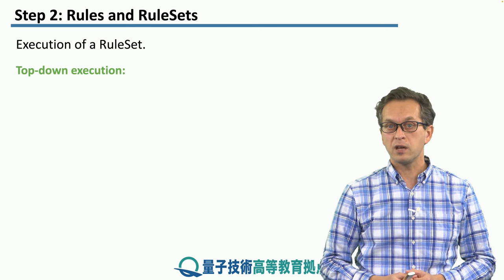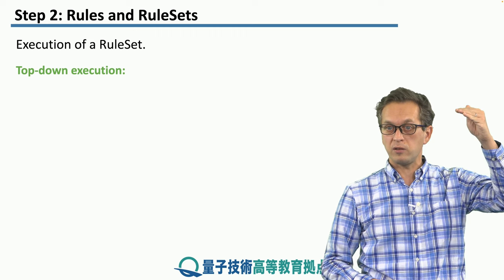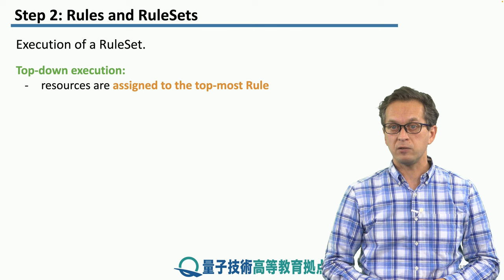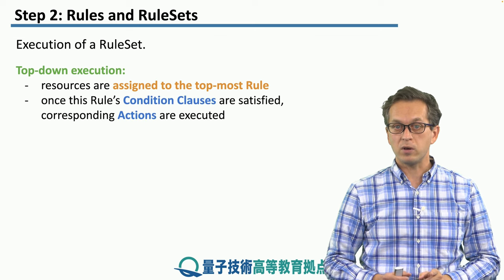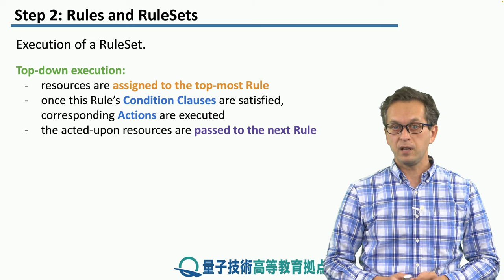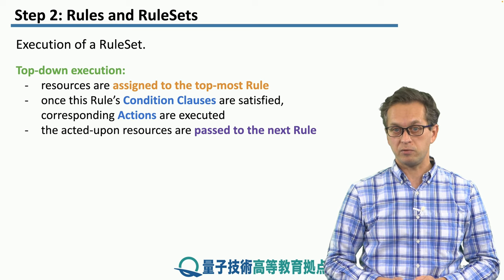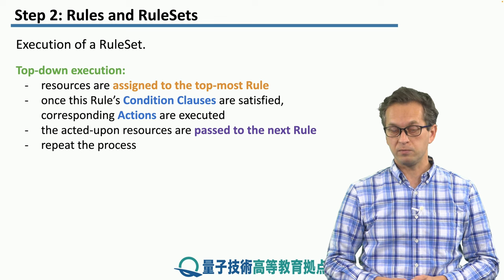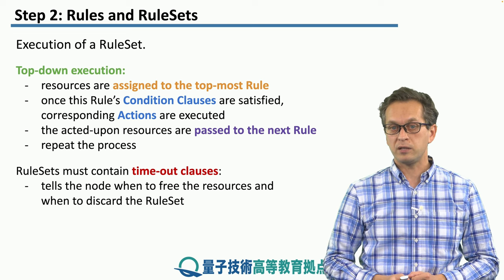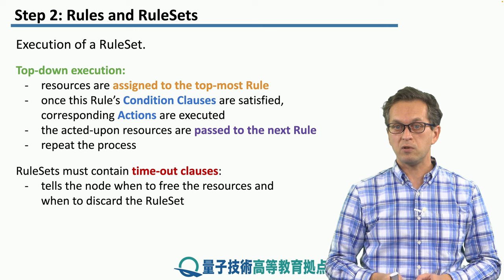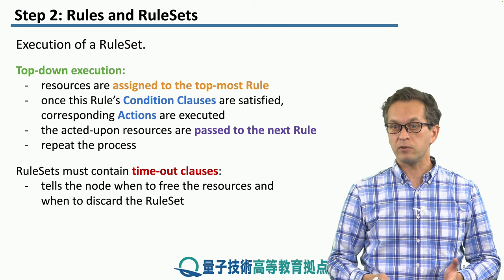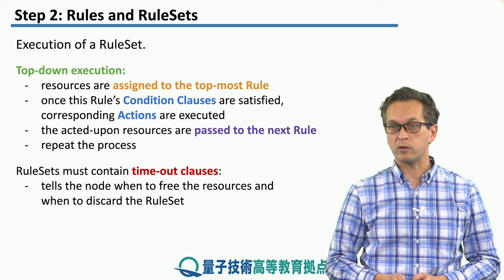Execution of a rule set follows a top-down execution. We start from rule 1; once that is done, we promote to rule 2, rule 3, rule 4, and so on. Resources are assigned to the topmost rule. Once this rule's condition clauses are satisfied, the corresponding action clauses are executed, and the acted-upon resources are passed to the next rule. The process is then repeated. Importantly, rule sets must contain a timeout clause, so the rule set knows when to free resources and when to discard the rule set — otherwise resources will be locked and we will not be able to proceed with our communication protocol.